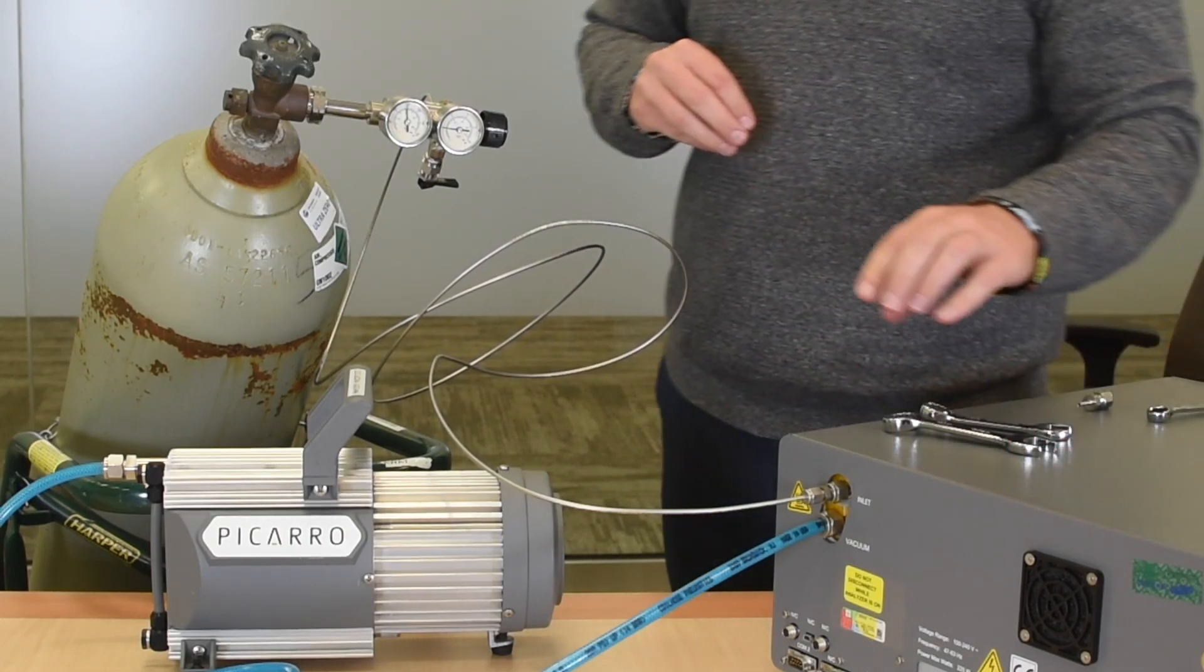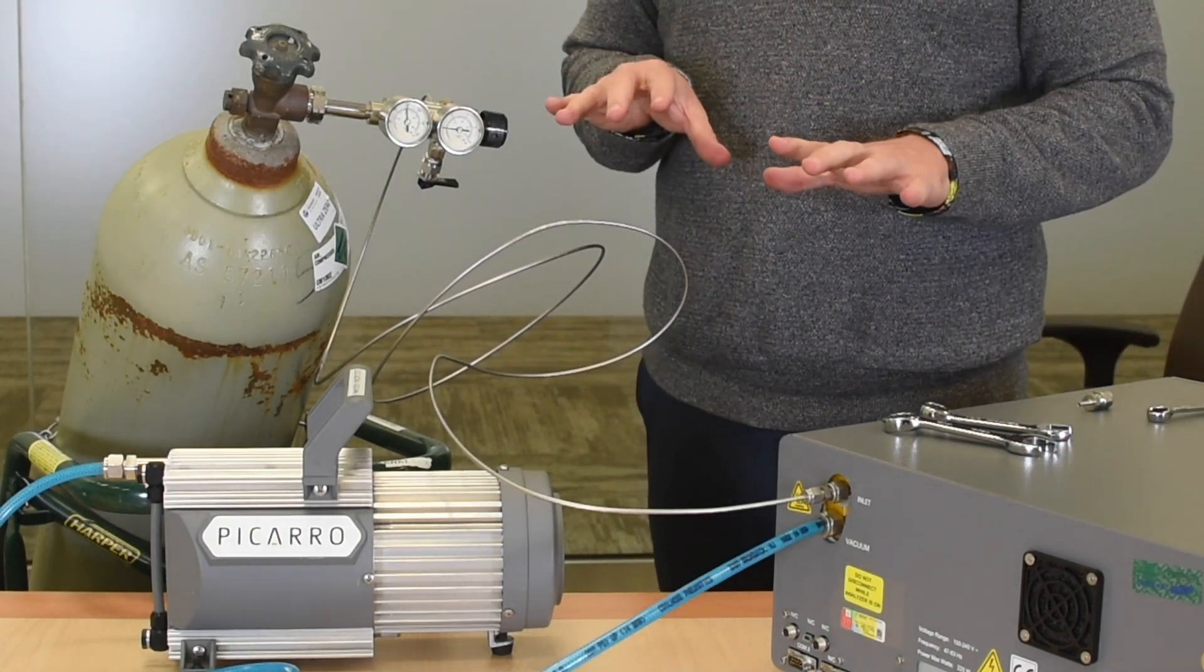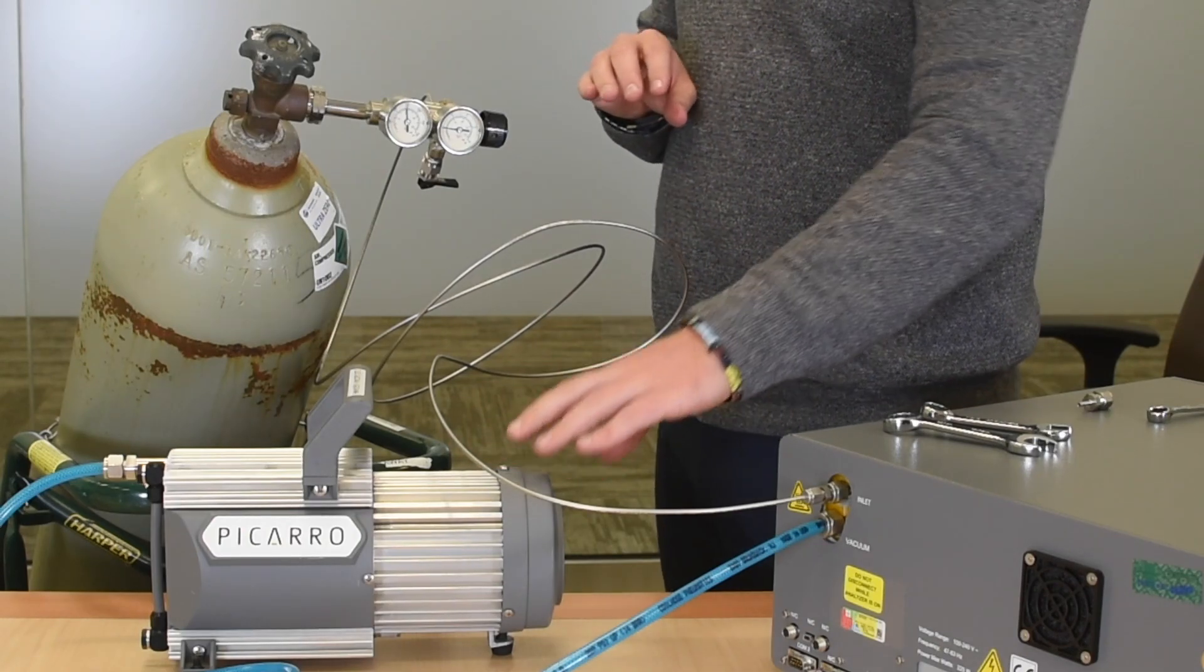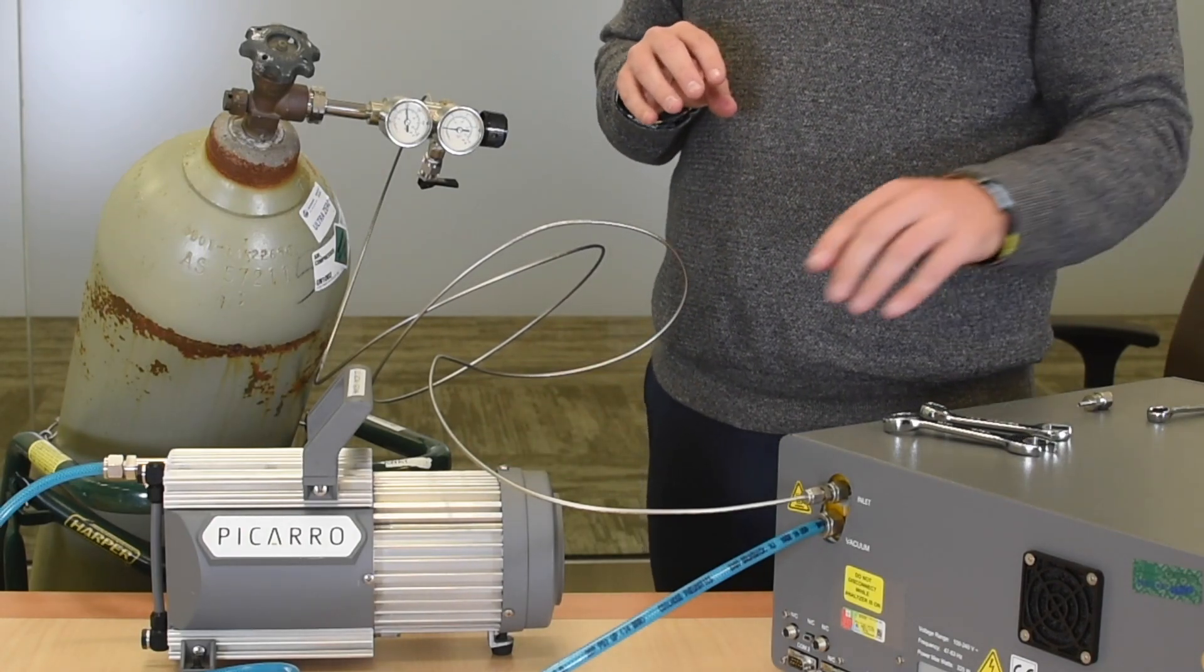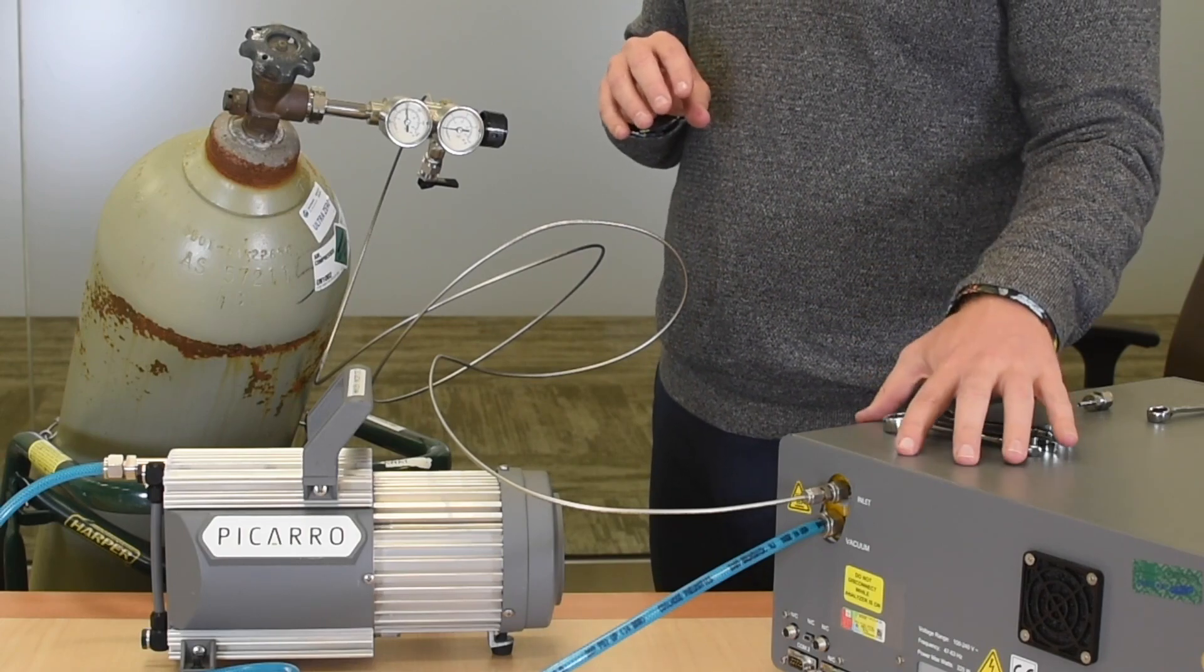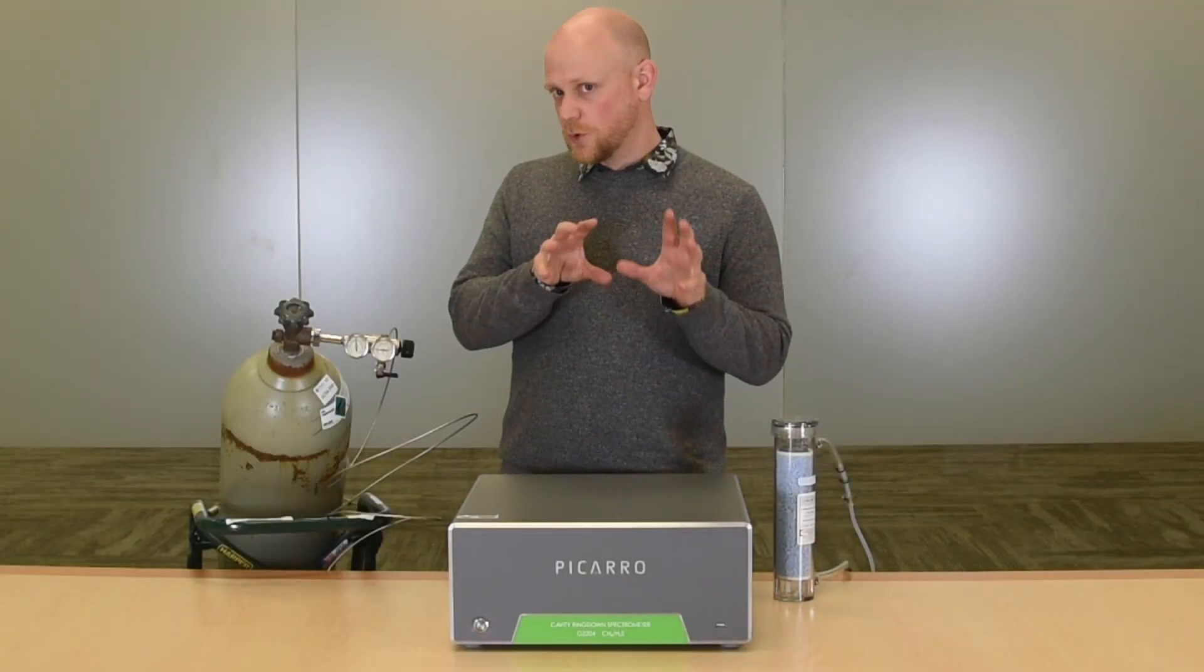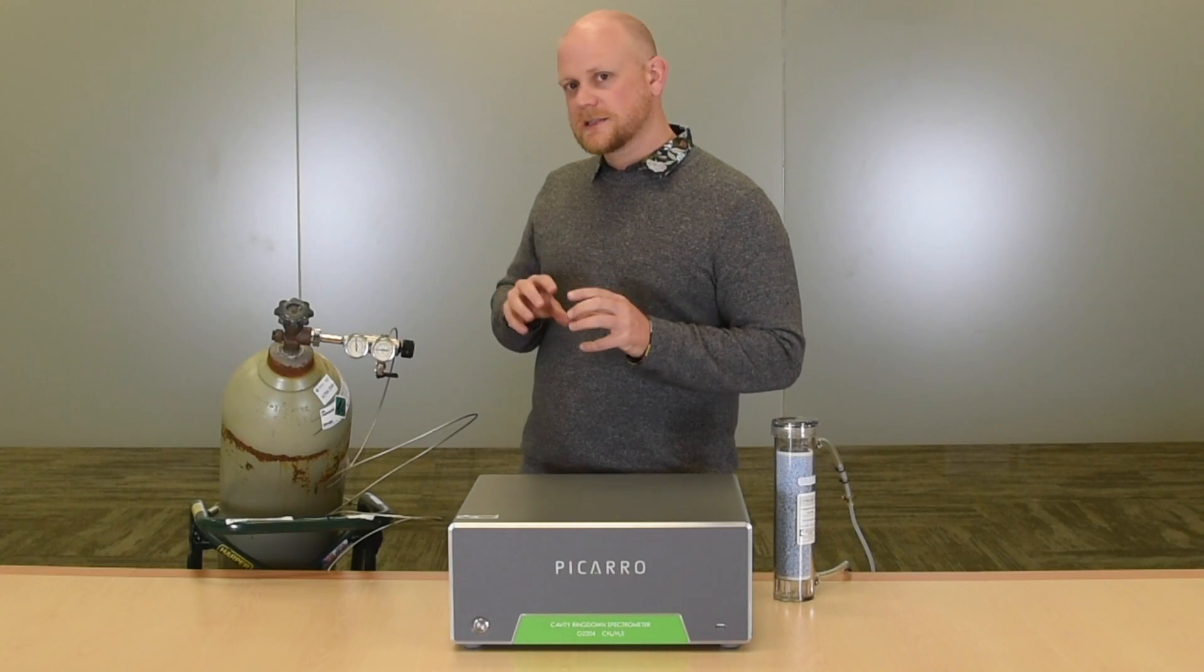You want to make sure that you never start the instrument without already having started the pump. That ensures that the valves function well, and that ensures the system starts out evacuated rather than pressurized. As a point of quick clarification, that last example was a demonstration of how you connect a cylinder to our instrument. For example, if you were purging out the cavity before shutdown or performing a calibration.